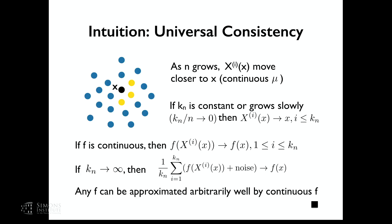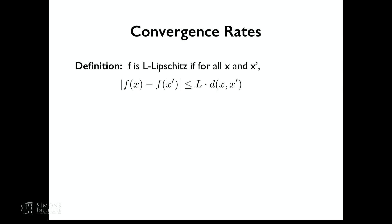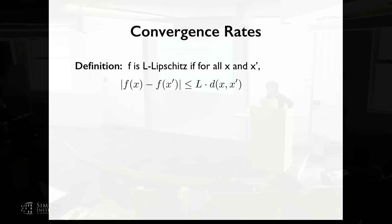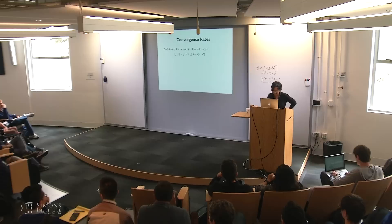So we talked about how nearest neighbor is universally consistent. Any questions about universality? — Yes, can you explain why we need kn over n to go to zero?